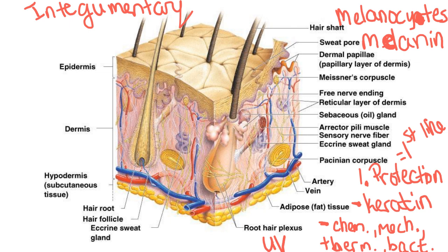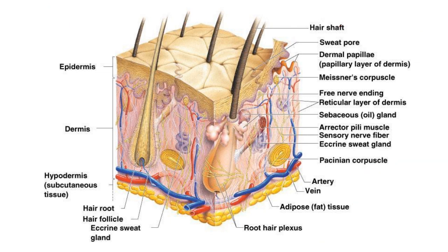In addition to protection, a second function of our skin is to help prevent desiccation — basically drying out, or excess water loss. Our skin is going to prevent us from drying out and turning into a dried-up, dusty mummy. In addition to that, our skin is also going to help us regulate body temperature.